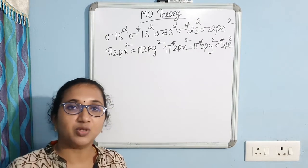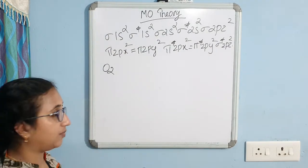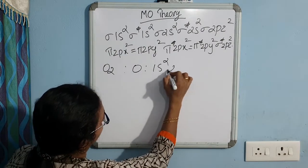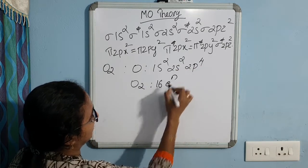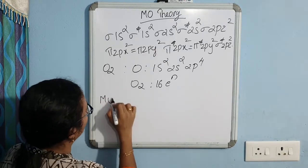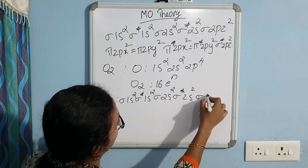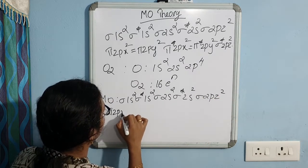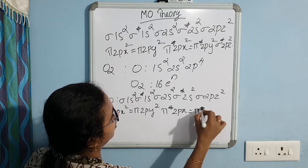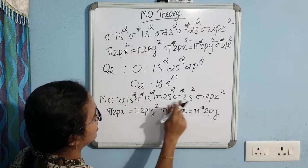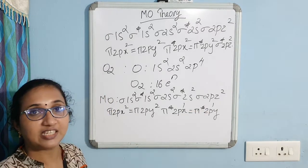Let us take oxygen molecule as an example. The atomic configuration of oxygen is 1s², 2s², 2p⁴. Each oxygen atom has 8 electrons, so the oxygen molecule has 16 electrons — more than 14. Its MO configuration is: sigma 1s², sigma* 1s², sigma 2s², sigma* 2s², sigma 2pz², pi 2px² = pi 2py², pi* 2px² = pi* 2py¹ each. Counting gives us 14 electrons accounted for, and the two remaining electrons occupy singly in pi* 2px and pi* 2py as per Hund's rule.